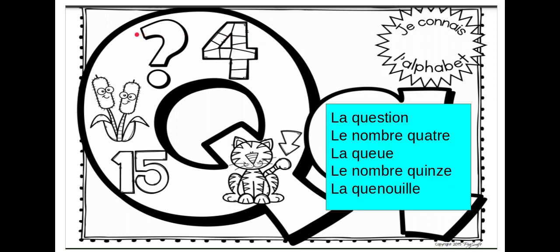Pour commencer, nous avons la question. La question. Question. La question. And as you can see, we have Q et U ensemble. So that's what I meant to make the K sound.